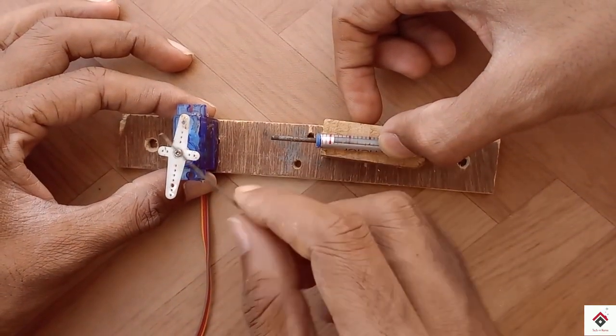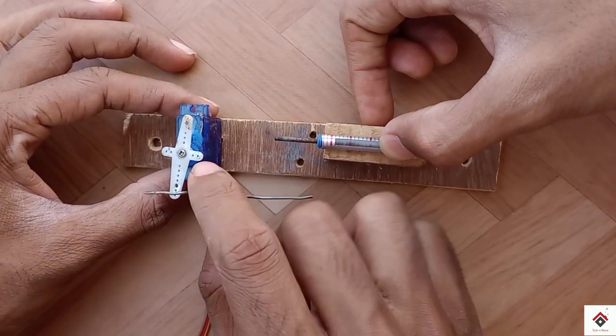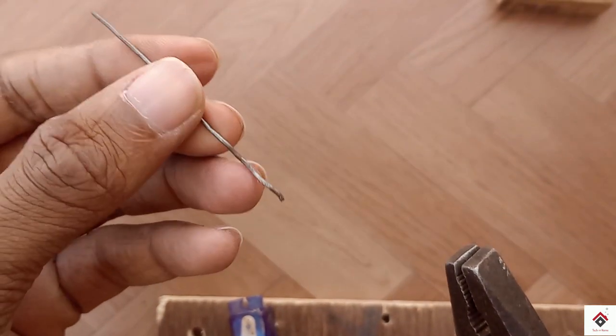Here I am using one more iron rod to convert this servo rotation into a linear motion. We have to make some bends like this.